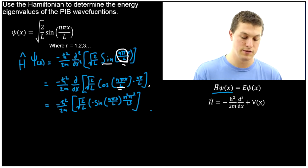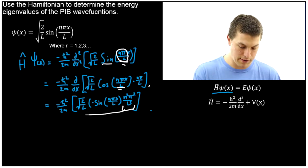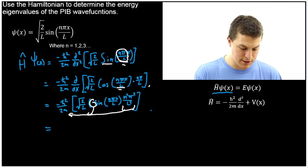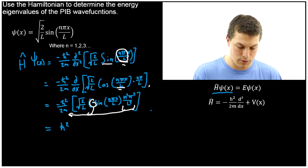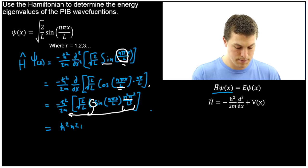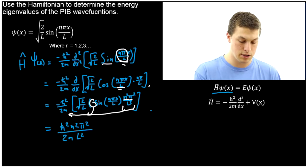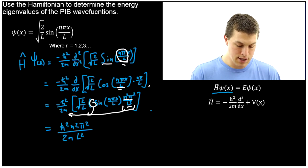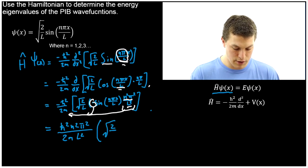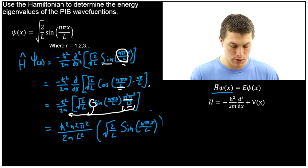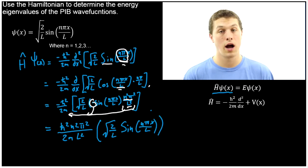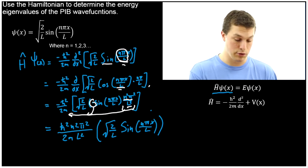Let's collect some constants so we can see what we've got here. We're going to take these constants and pull them out front, along with the negative sign. When we do that, our negative signs cancel. We get h-bar squared, then n squared and π squared, all over 2m times L squared. That's all times square root of 2 over L sine nπ over X. Notice that's the same function we started with. What that tells us is that the particle in the box wavefunctions are an eigenfunction of our operator, in this case the Hamiltonian.